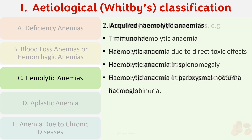Acquired hemolytic anemia is due to some acquired cause. This can be due to antibodies, and is thus called immunohemolytic anemia; hemolytic anemia due to direct toxic effect; hemolytic anemia in splenomegaly; and hemolytic anemia in paroxysmal nocturnal hemoglobinuria. So in hemolytic anemia you can have hereditary as well as acquired forms.